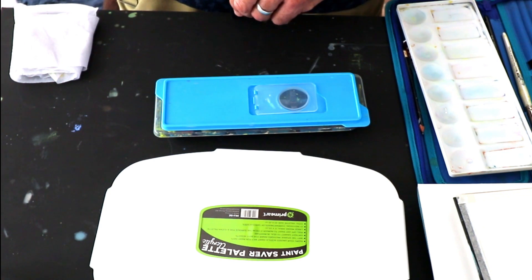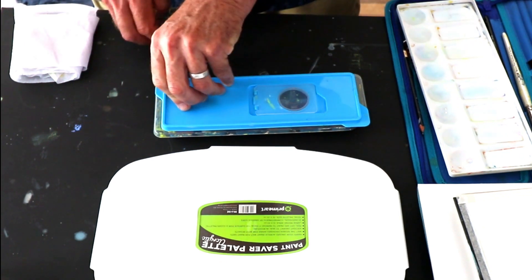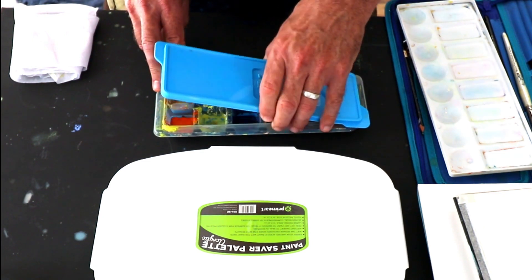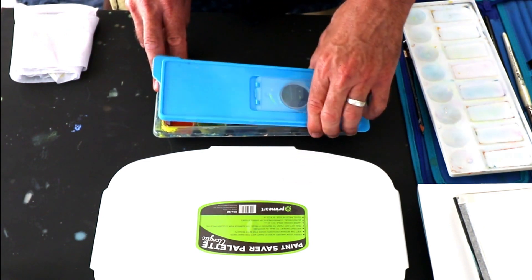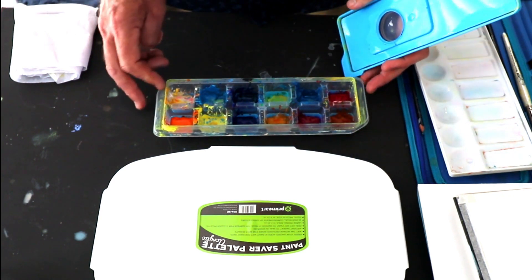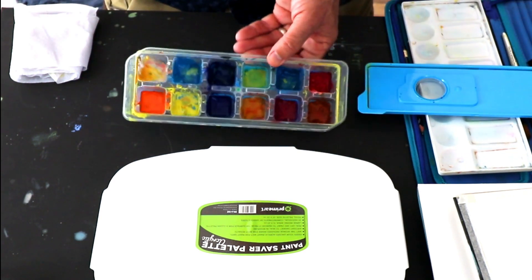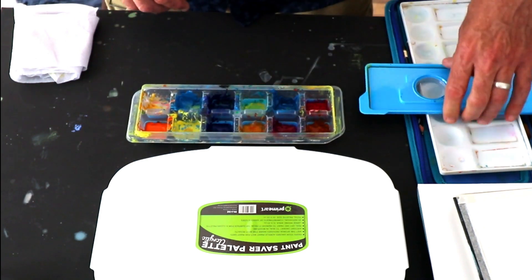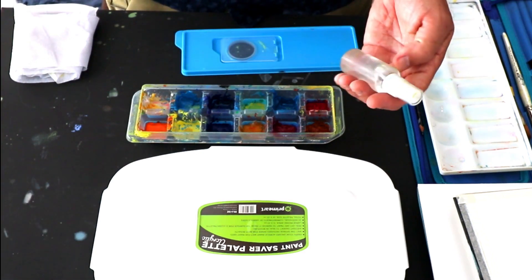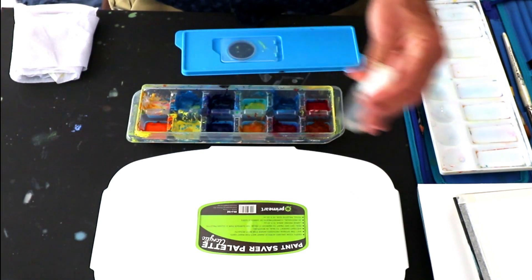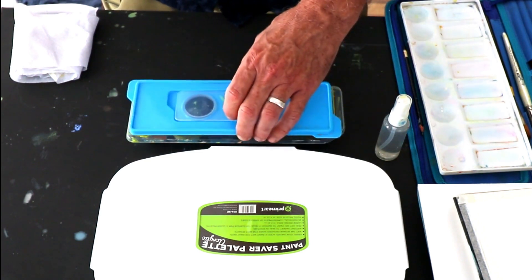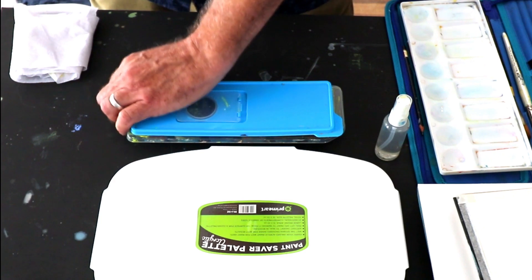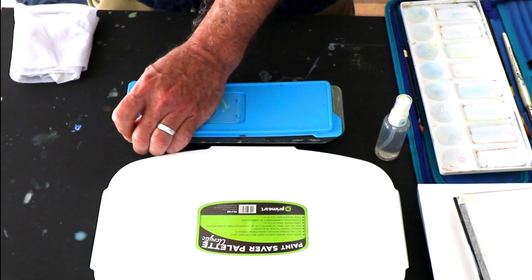Now you can go for something like this if you can't find a purpose made palette. This is simply an ice cube tray and I found I really like the containers. And if I use a little spritzer of water like this, I can keep the paints moist and seal them up and they stay moist and ready to work for several days afterwards.